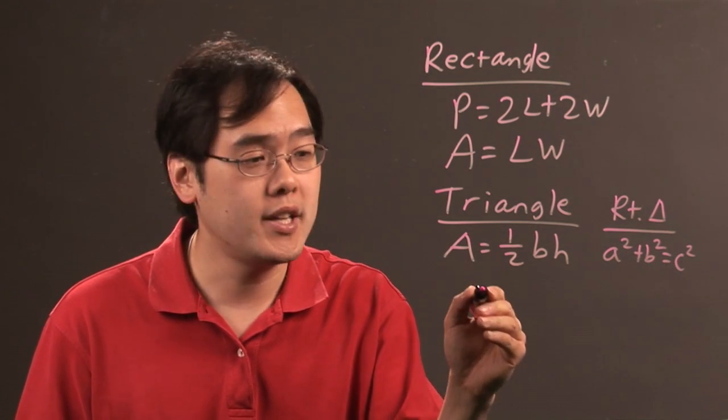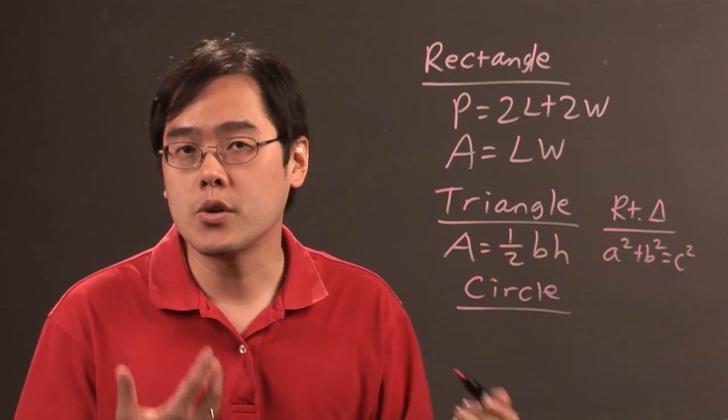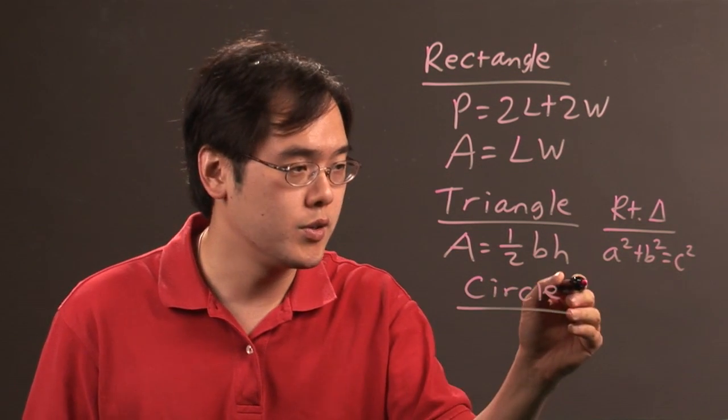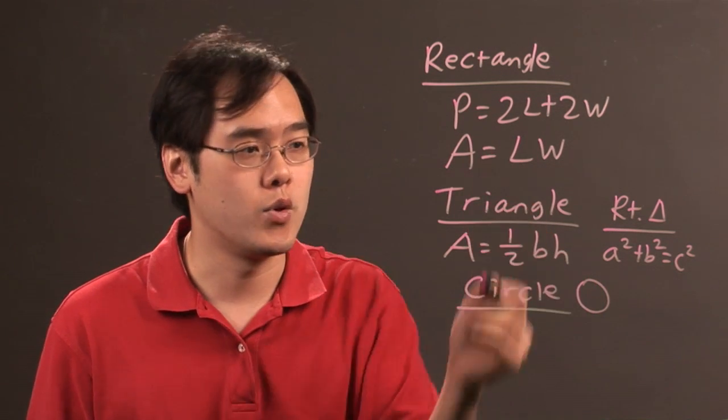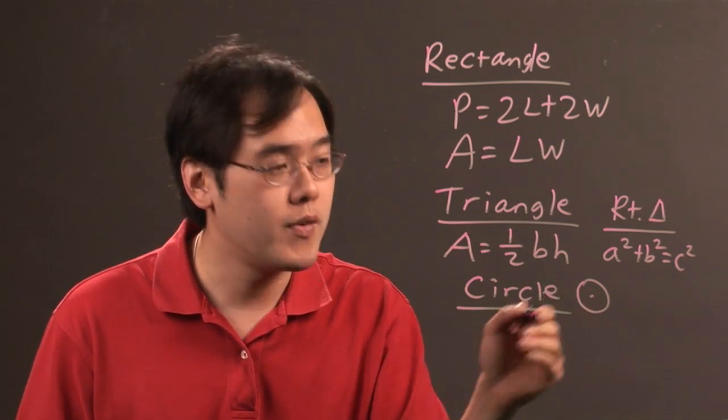C is the hypotenuse. And last but not least, you have that of a circle, which is a little bit different because a circle is different from a rectangle, triangle, and square. Everything revolves around the center.